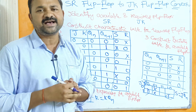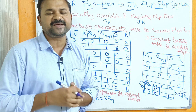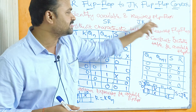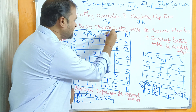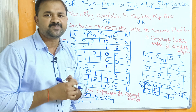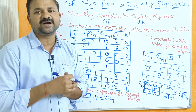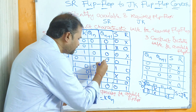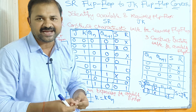Step two is to construct the characteristic table for the required flip-flop, that is the JK flip-flop. The inputs are J, K, and QN, where QN is the current state, and QN+1 is the output — the next state. With three inputs, we will have 2³ = eight combinations total.